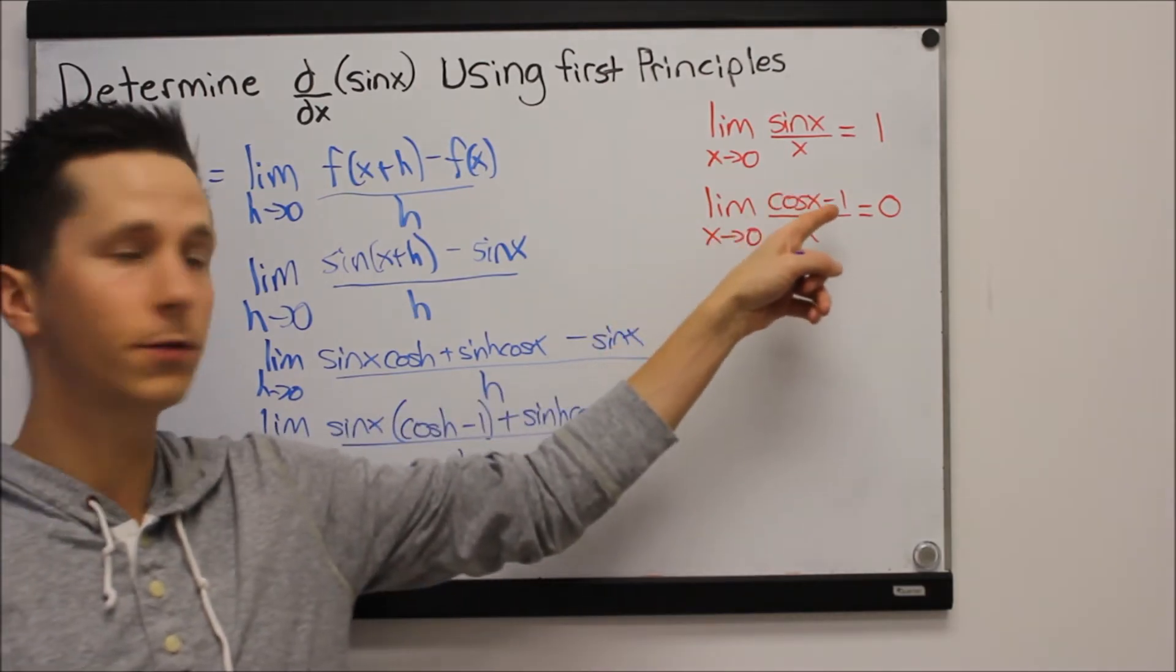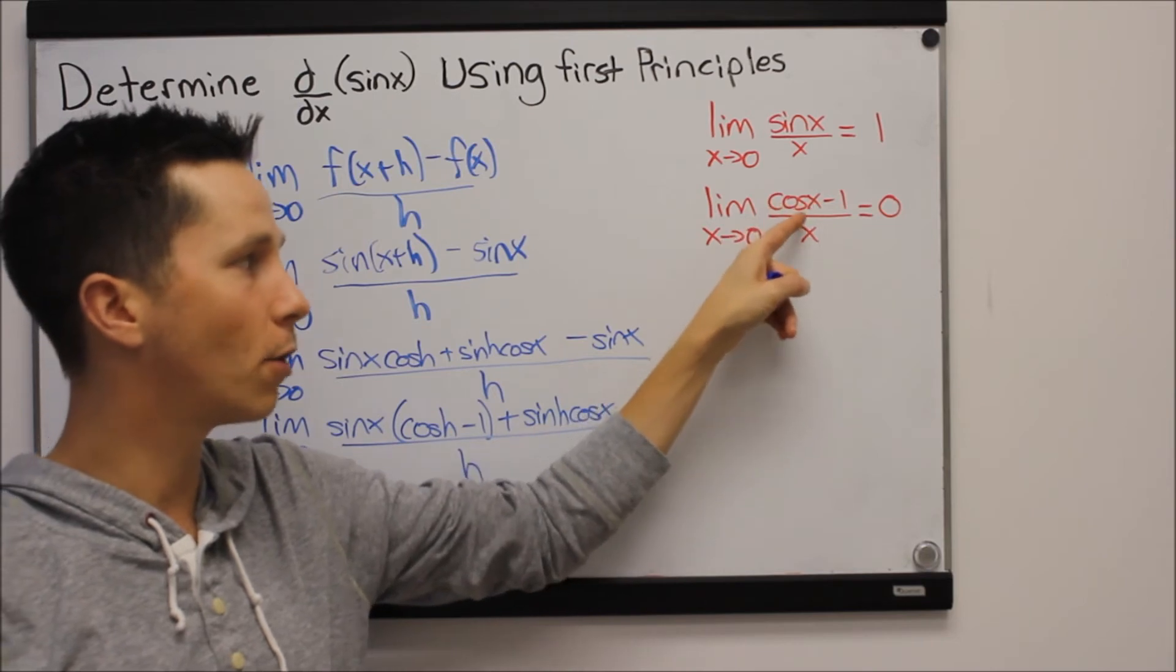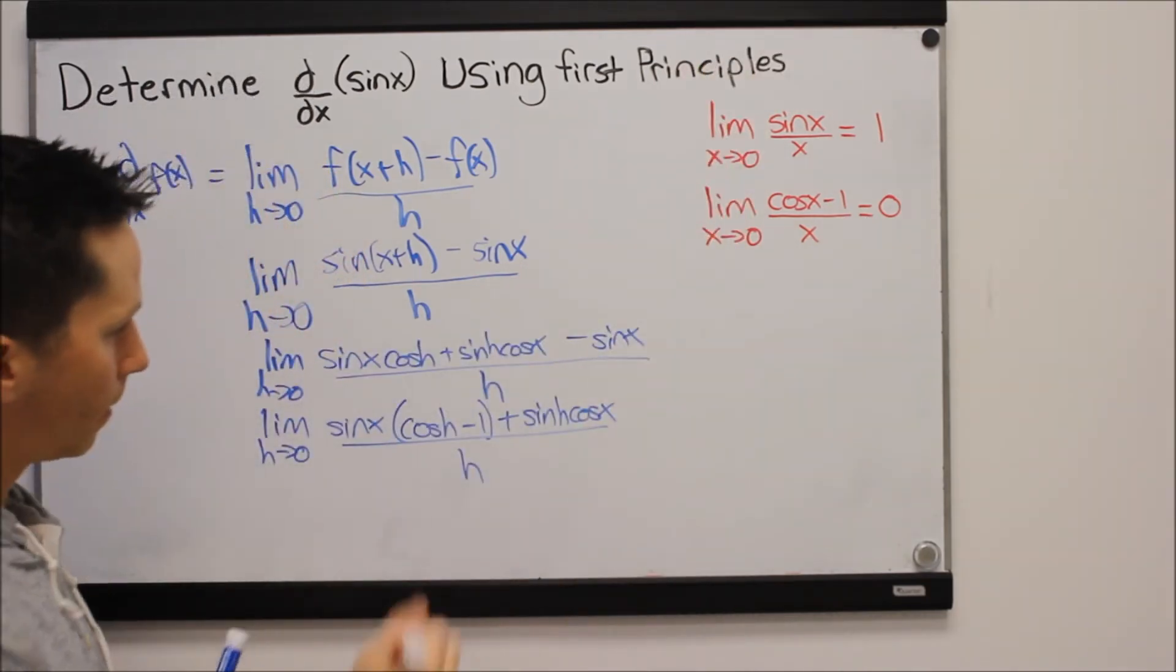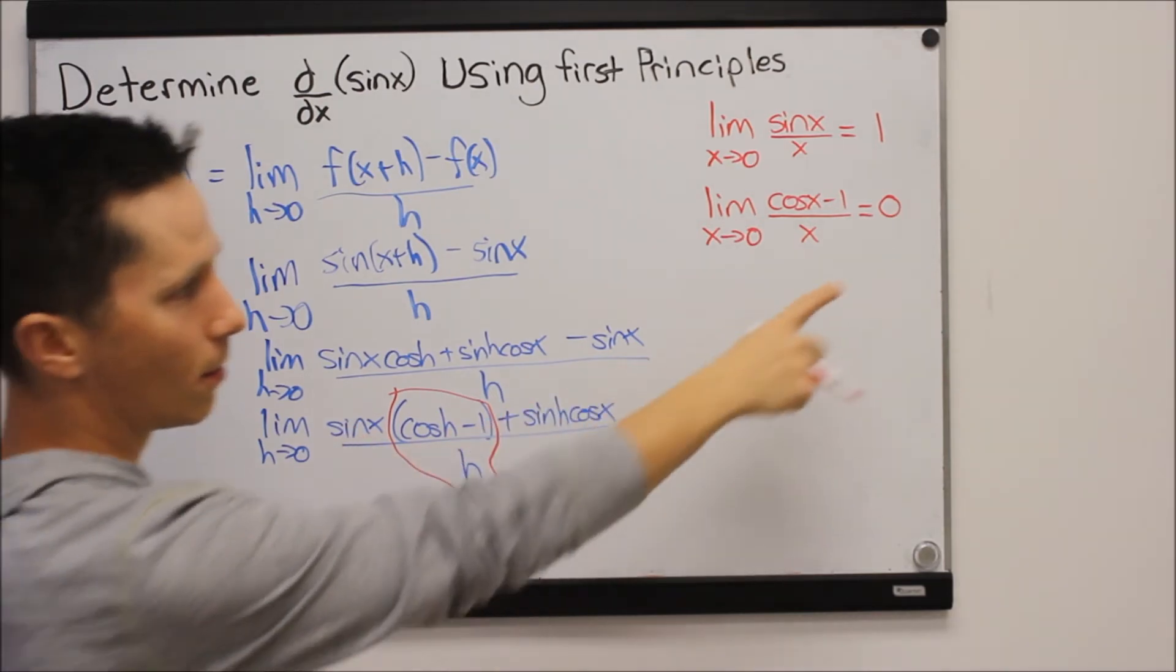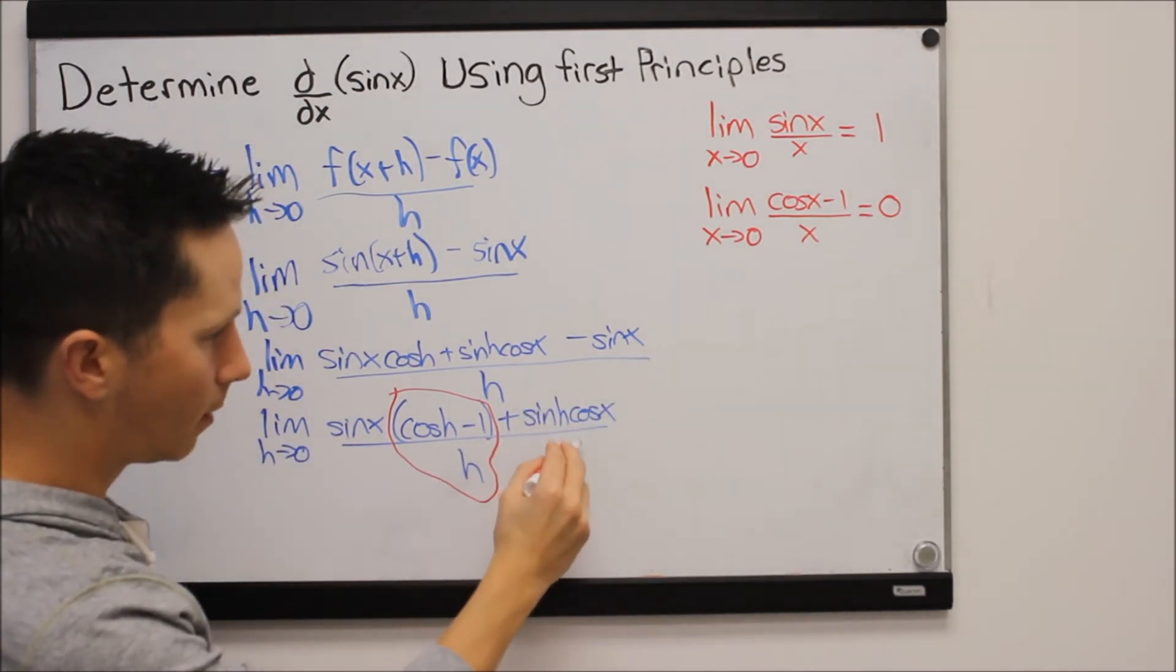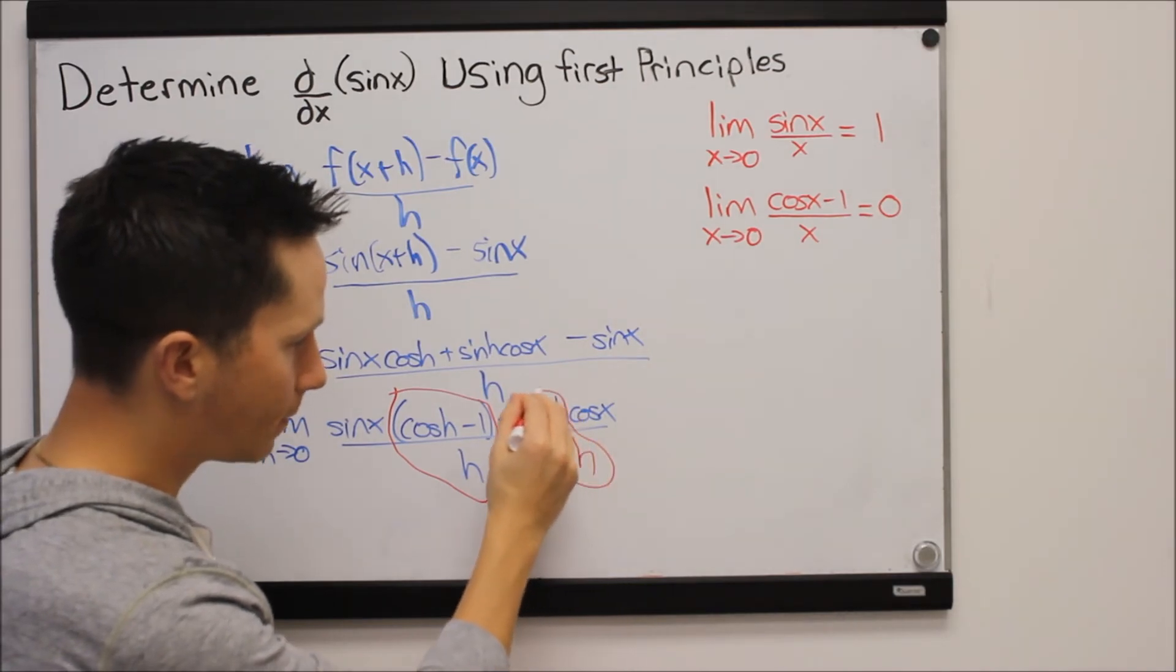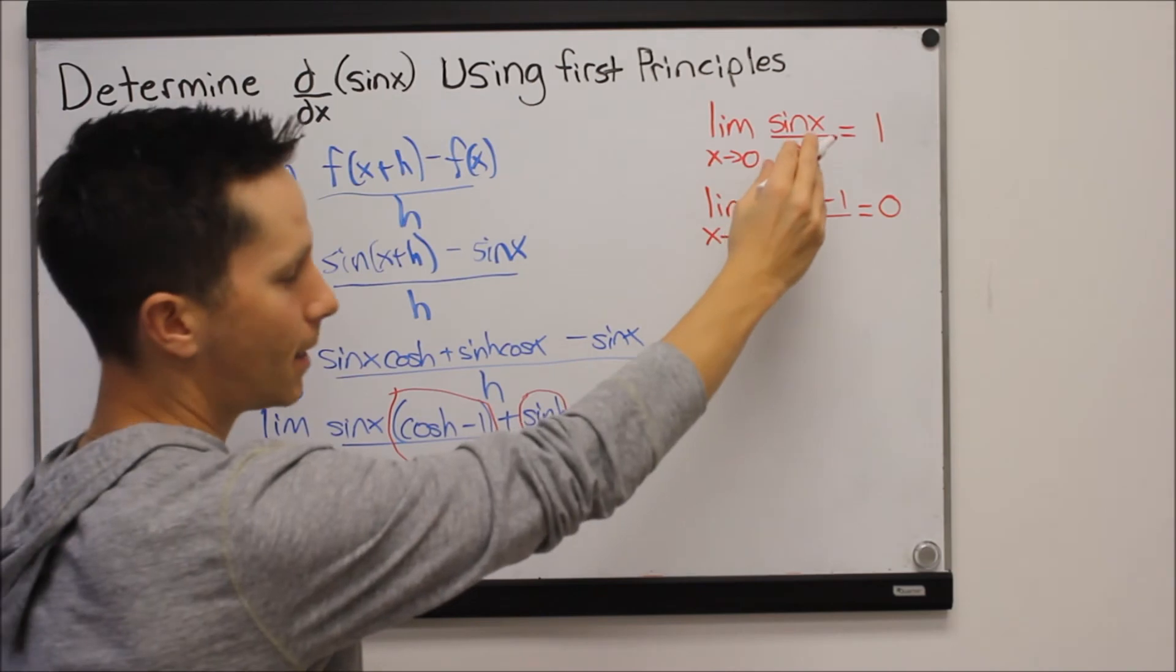Well now we can use this identity that we know of the limit as we're going to zero for the angle, cos x minus one over x. You see we can group that right here out of this term. So that's going to be zero and the h is also under here. I'm actually going to write that just so that we can see it. The h is also under this term and here we've got our other identity of sine of the angle that's going to zero over that angle. That equals one.